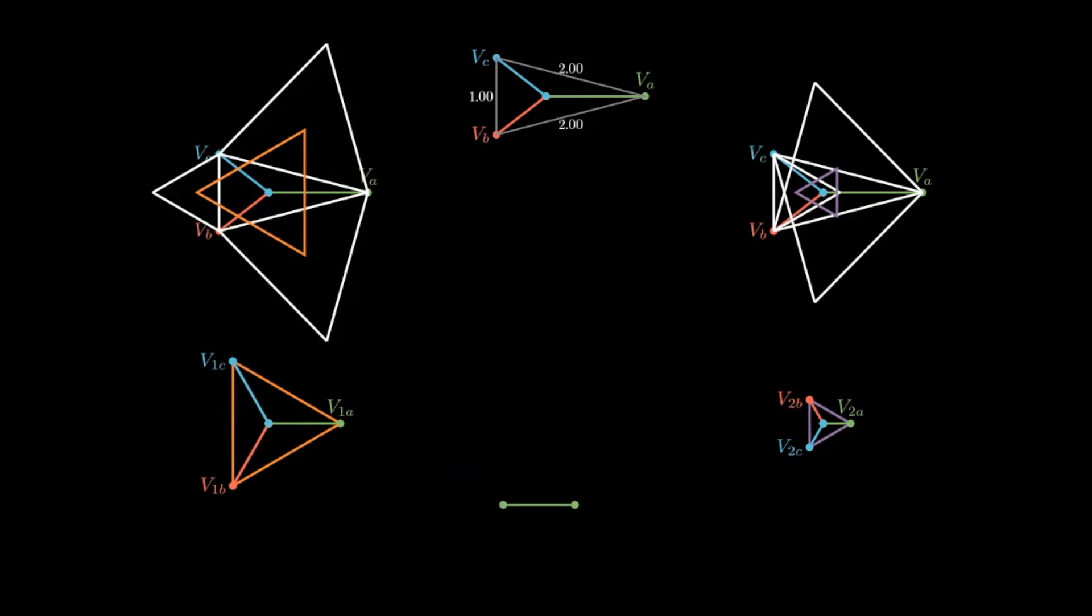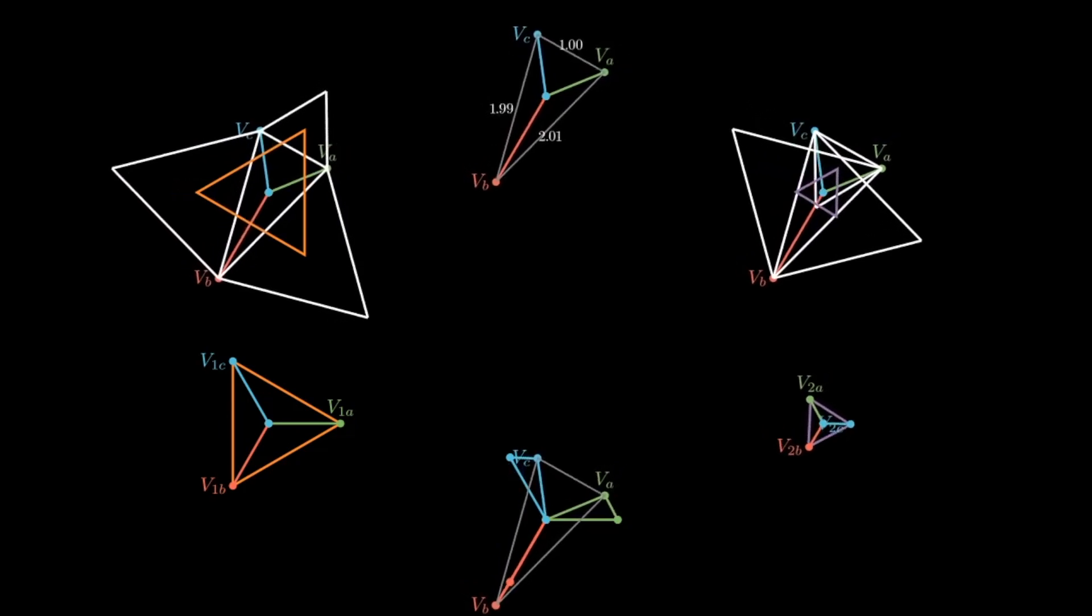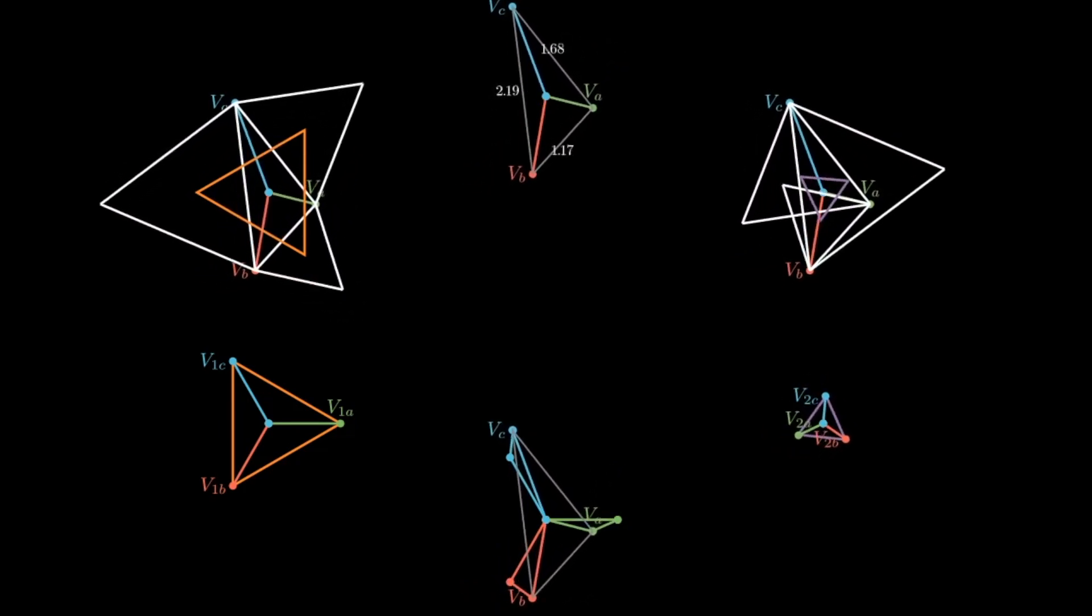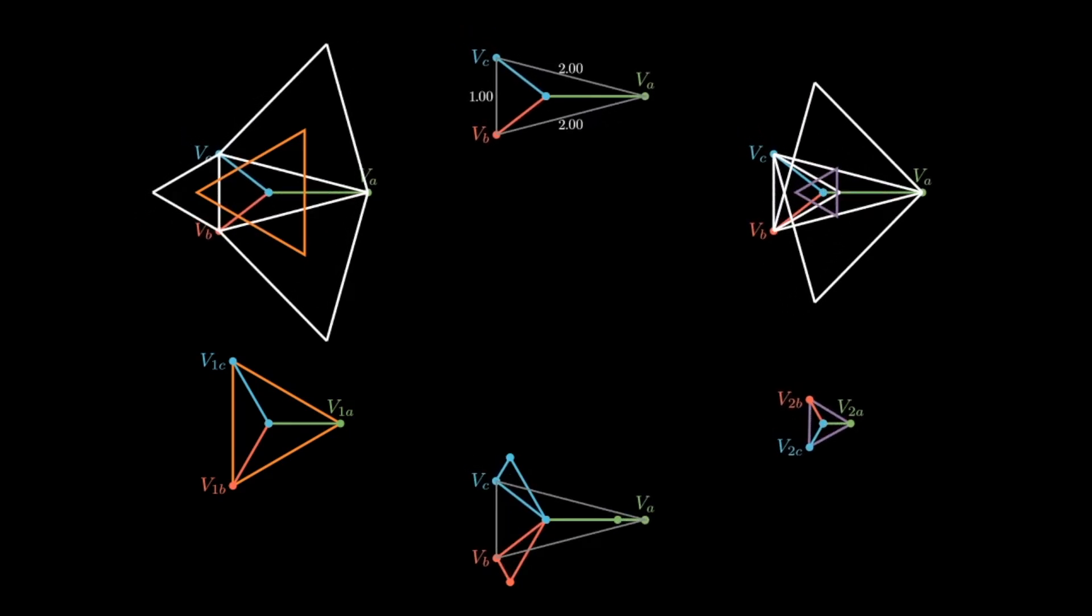Anyway, to close out this explanation, it helps to show the reconstruction of VA, VB, and VC using the V1 and V2 phasors that were just extracted geometrically. Then when V2 rotates 360 degrees, it becomes clear how these symmetrical component values provide a great tool for recreating any type of imbalance in a set of phasors.